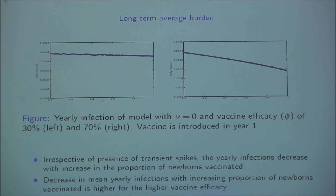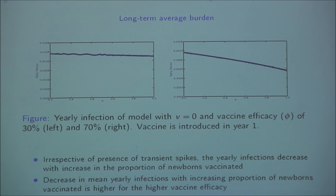About the long-term average burden: since we know that the limit cycles can change — going to a higher or lower amplitude — we calculated the yearly infections from the model again and find that the long-term average burden is also pretty smooth.